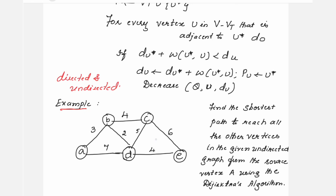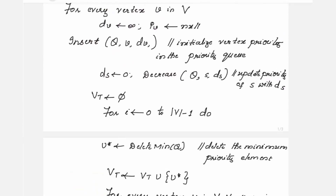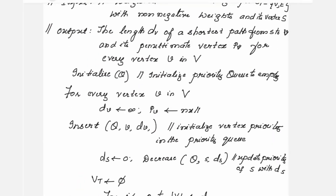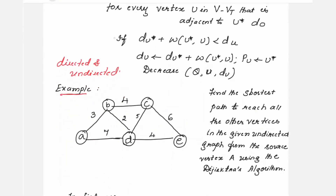Looking into the pseudocode for this Dijkstra algorithm, the main logic is this particular line: if d(u*) + w(u*, u) < d(u), then make d(u) = d(u*) + w(u*, u). This is the main logic used in Dijkstra's algorithm.